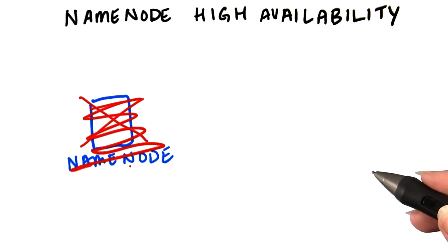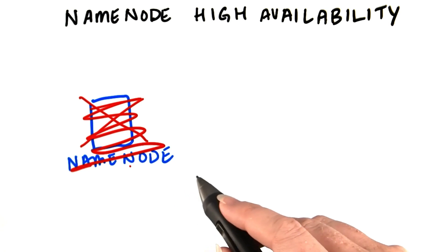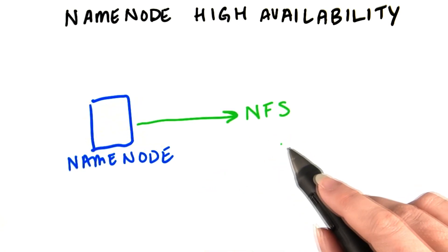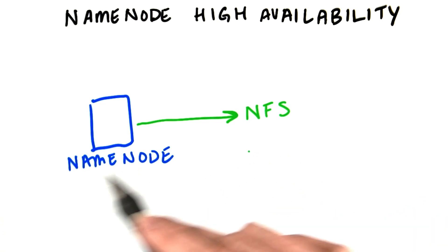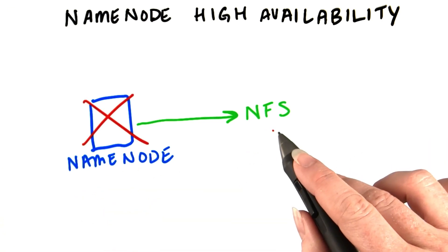So to avoid the problem, people would configure the name node to store metadata not just on its own hard drive, but also somewhere on a network file system. NFS is a method of mounting a remote disk. That way, even if the name node bursts into flames, there would be a copy of the metadata elsewhere on the network.